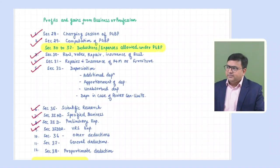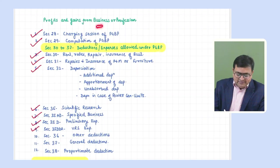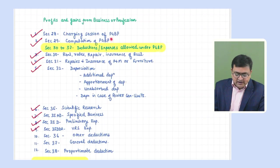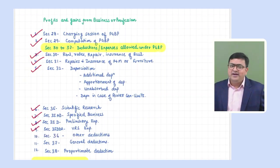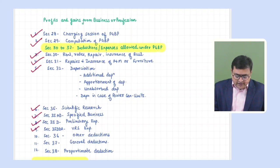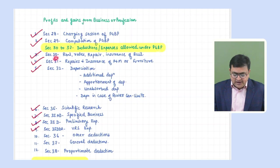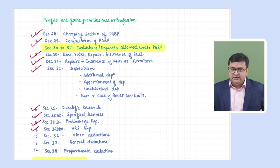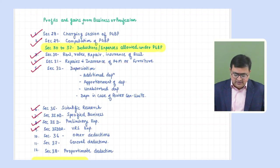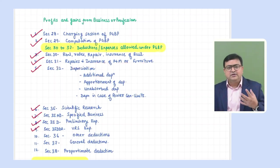In PGBP we have sections 28 to 44. Section 28 is the charging section, 29 was computation, and from 30 to 37 are the sections dealing with expenses allowed while computing PGBP income. We've already completed Section 30 — related to rent, repairs, taxes or insurance of building — and Section 31 for repairs and insurance of machines and furniture.